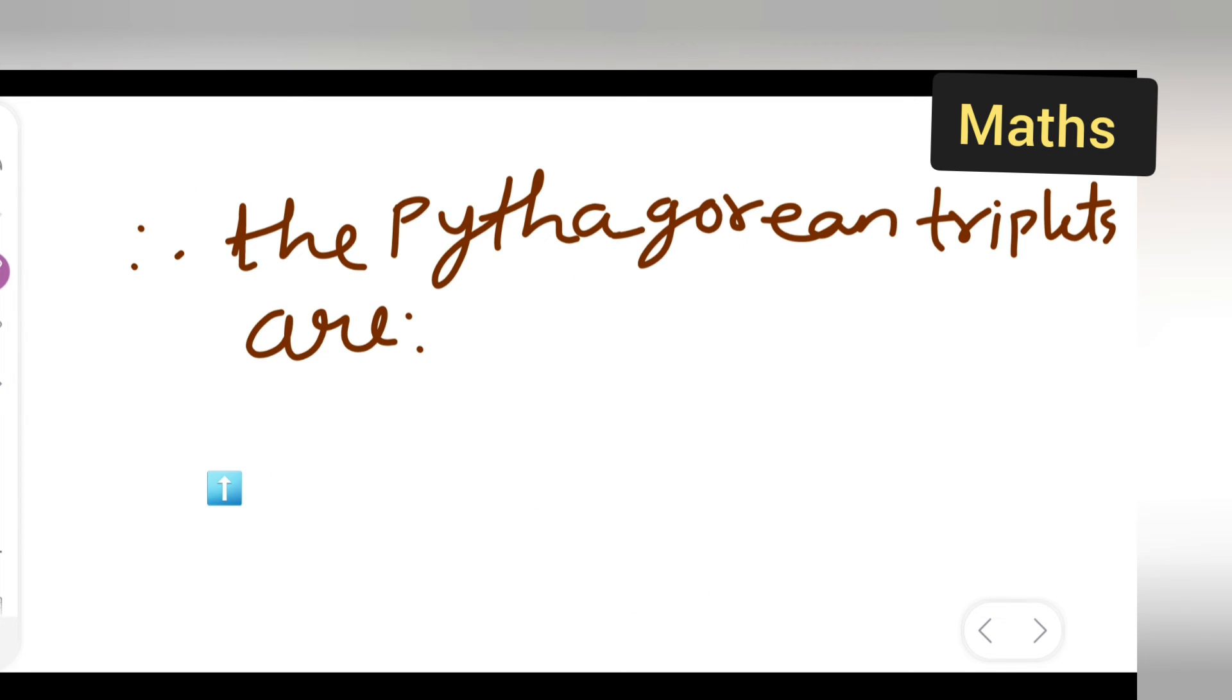Therefore, the Pythagorean triplets are... Now I will have to write down the Pythagorean triplets. Now what are the Pythagorean triplets? One will be 16. The other one will be what?